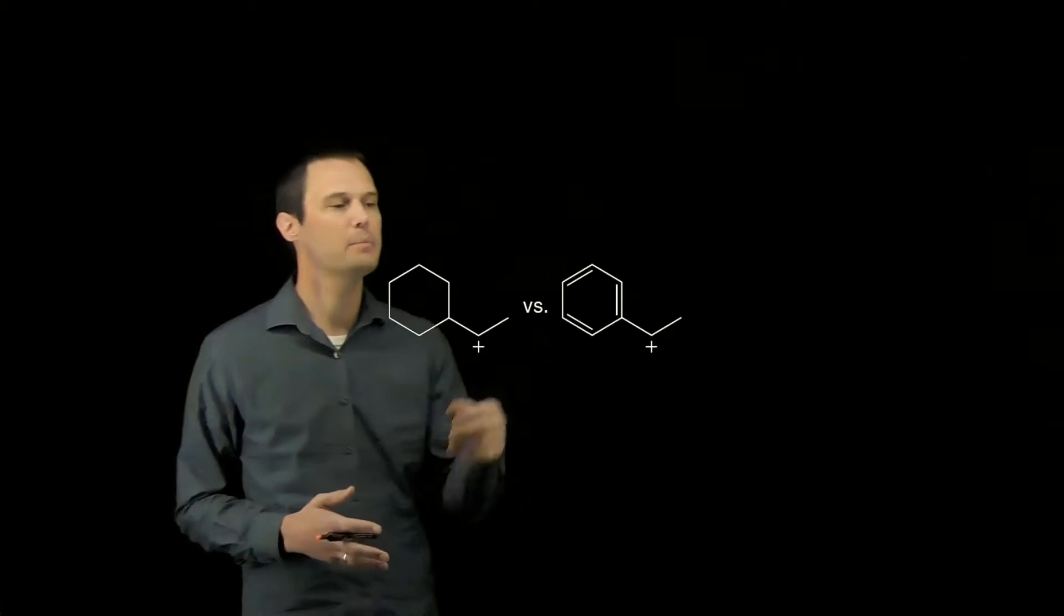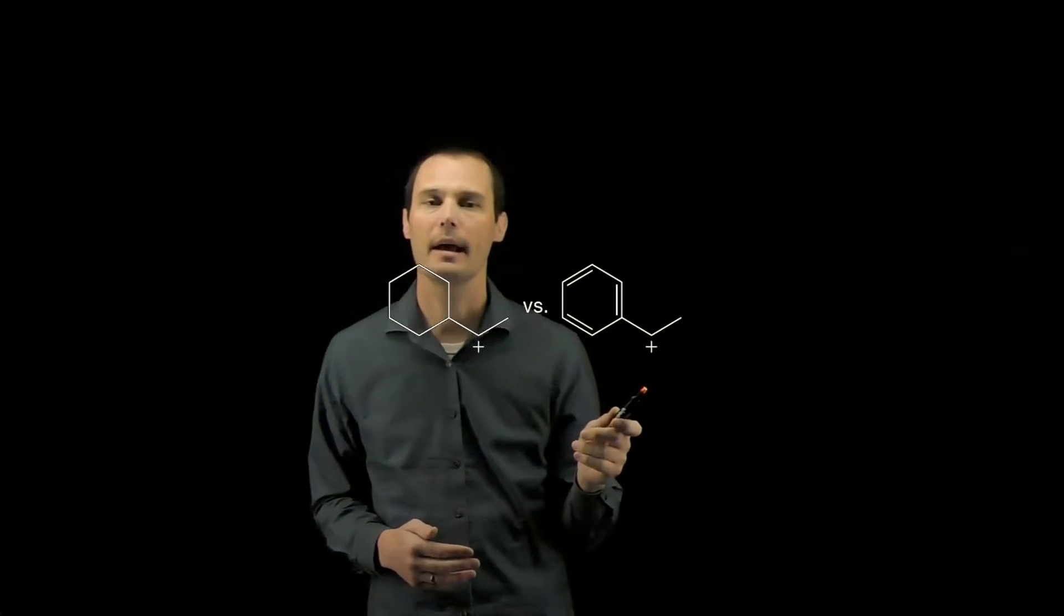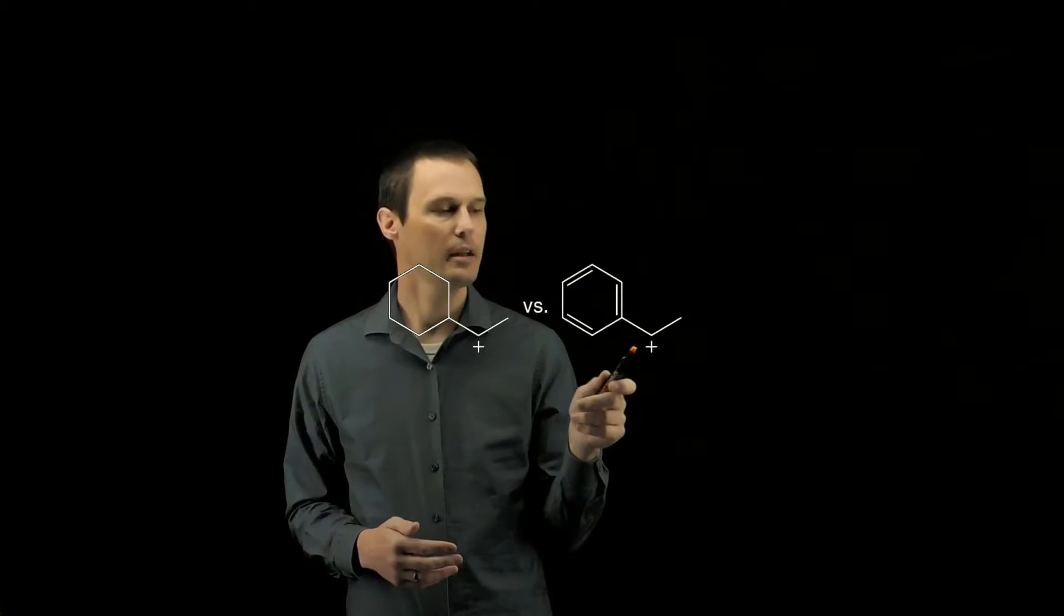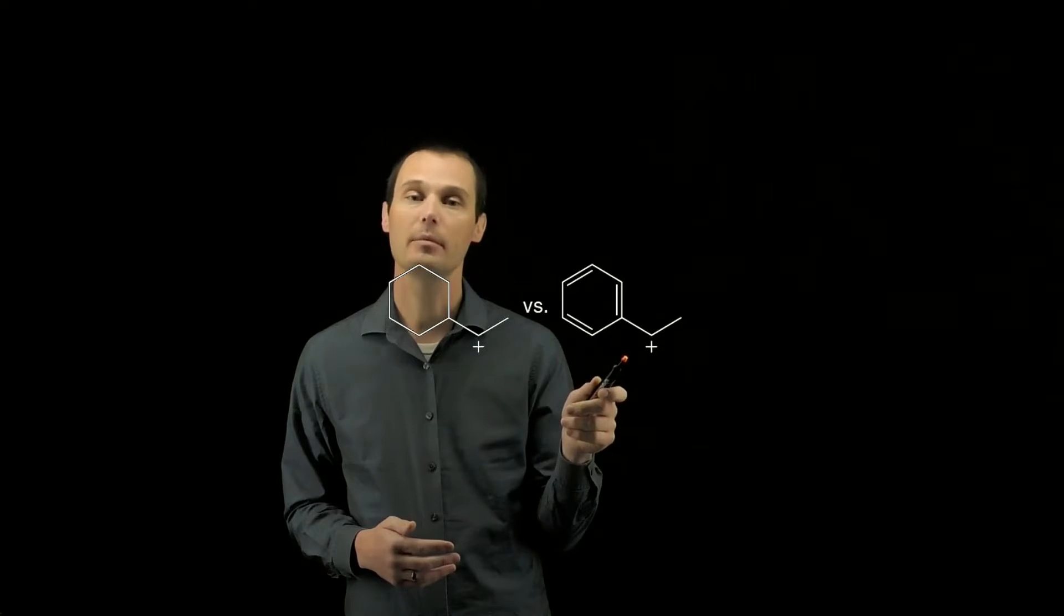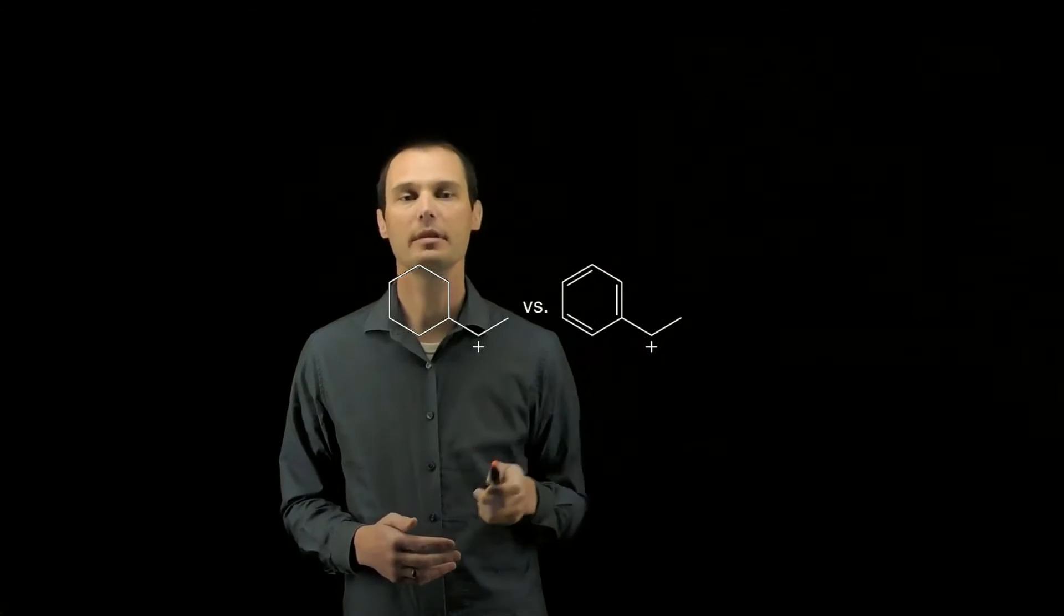What I notice next is the benzene ring adjacent to the carbocation in this example. The carbocation being adjacent to the benzene ring means that this carbocation can be stabilized by resonance with the benzene ring.